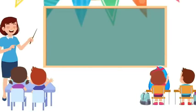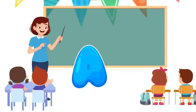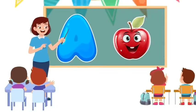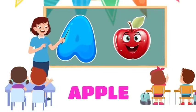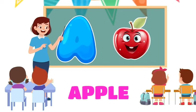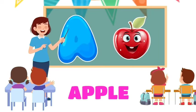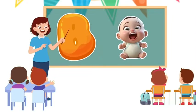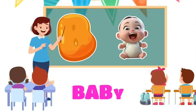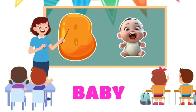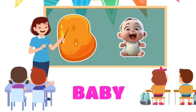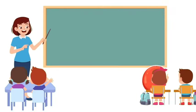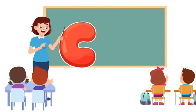A is for Apple. A, a, apple. A, a, apple. A, apple. B is for Baby. B, b, baby. B, b, baby. B, baby.